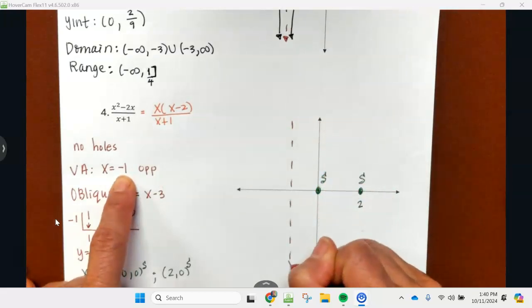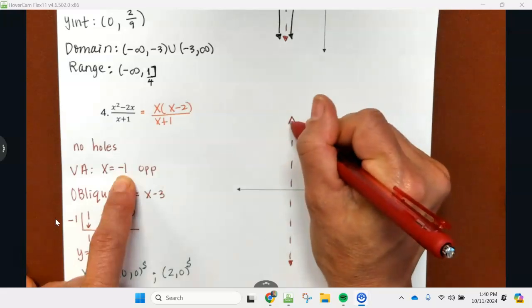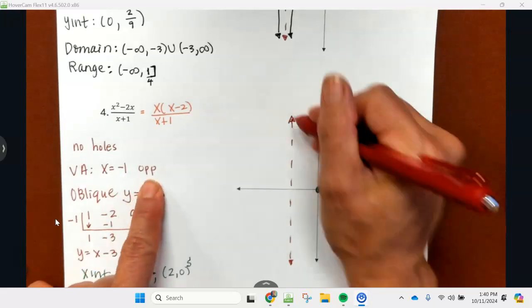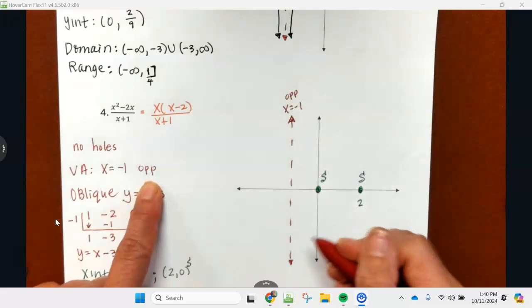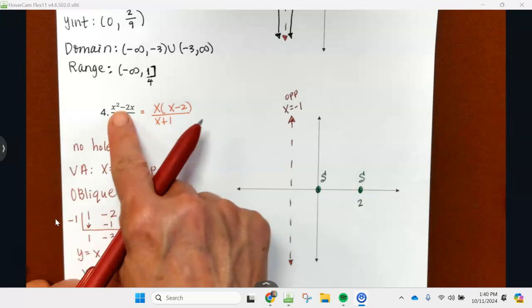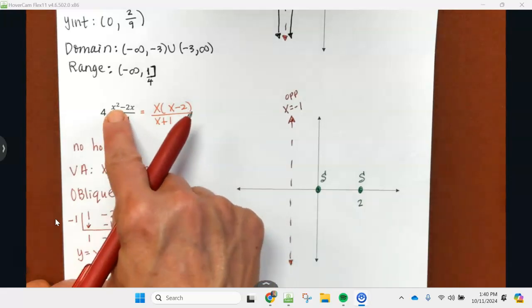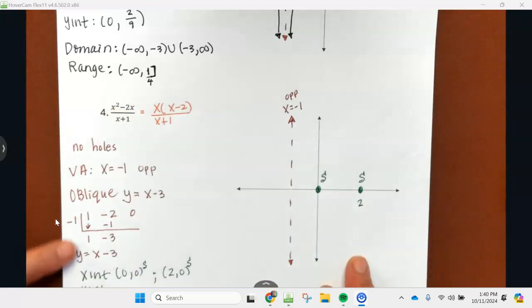We're going to write opposite behavior. We don't have a horizontal because remember the degree of the winner was the numerator, so we did synthetic and we got ourselves a slanted line.